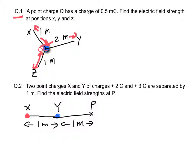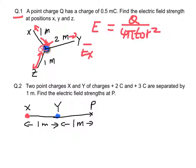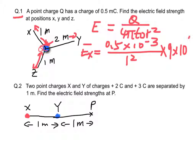Question number 1. Electric field due to a point charge equals Q over 4π epsilon r squared. We have E at x equal to 0.5 times 10 to the power negative 3 over square of 1, times 9 times 10 to the power 9, which is equal to 4.5 times 10 to the power 6 newton per coulomb.